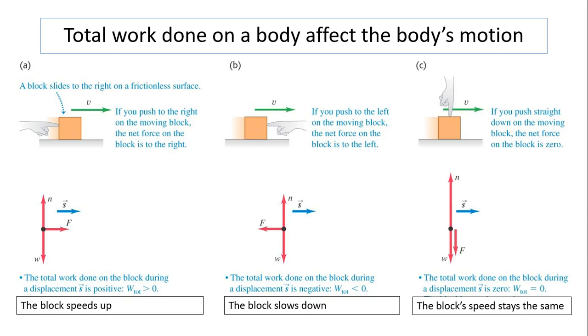Total work done on a body affects body's motion. Assume a block slides to the right on a frictionless surface. If you apply a force to the right, you are doing positive work. As a result, the block will speed up.